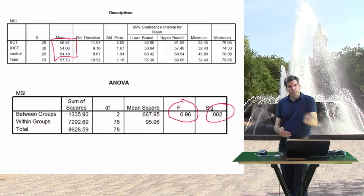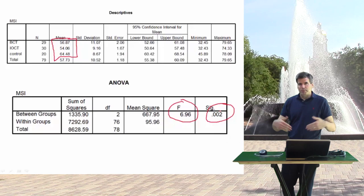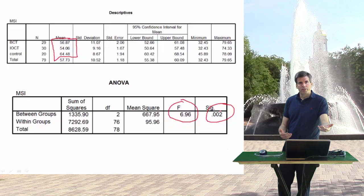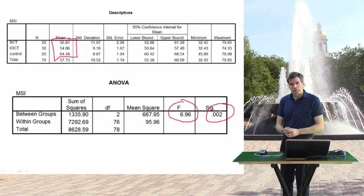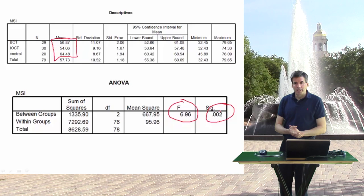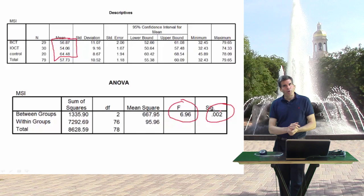Now, of course, if we just stop there, we're missing some important things, because once we say there's a difference between groups, the next thing you want to know is — well, where is that difference? Is the insight-oriented therapy group different from the control group? Is there a difference between the two treatment groups? So the next step is we want to ask those focused questions, where we look for specific differences between pairs of groups or comparisons.